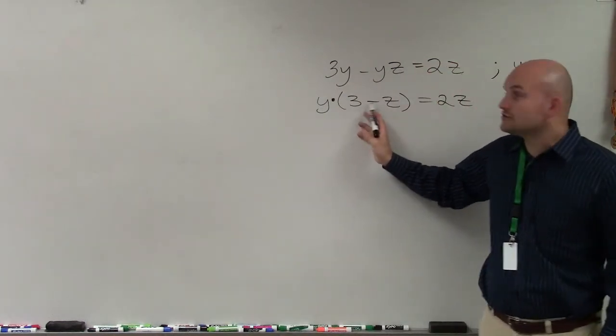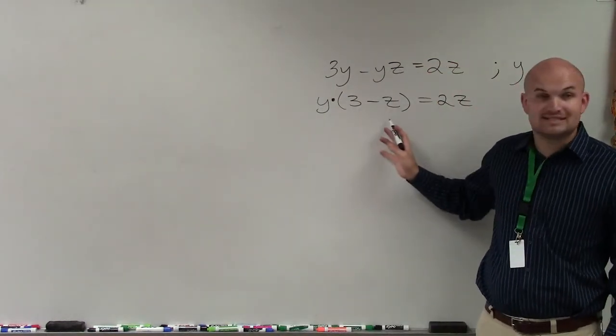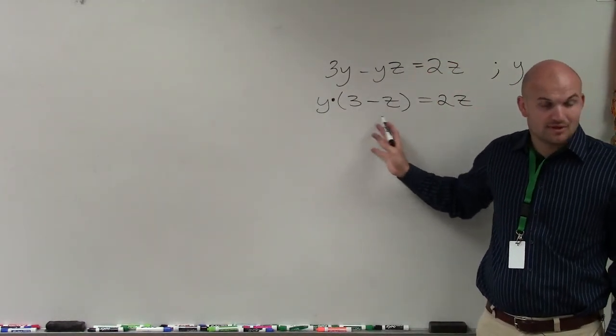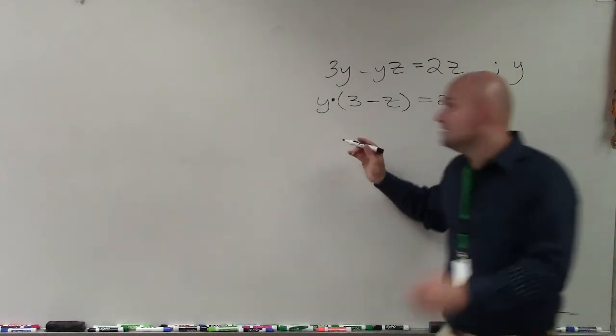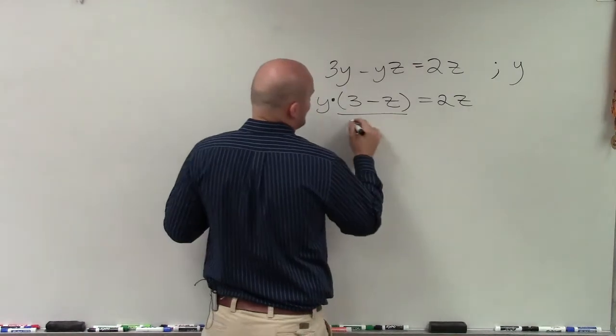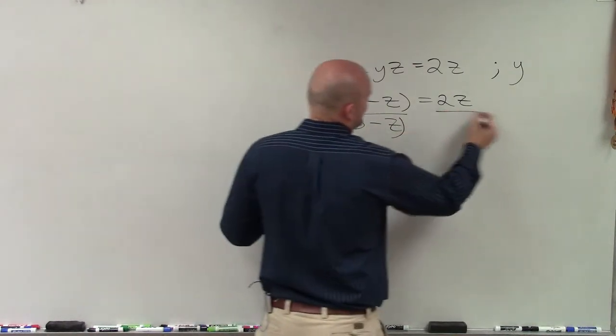Yeah, there's subtraction and addition being applied to the z, or to the 3 and the z. But there's no addition or subtraction being applied to the y. So to undo multiplication of 3 minus z, we need to divide by 3 minus z.